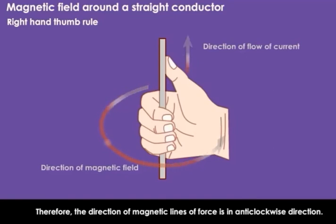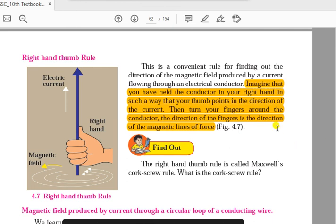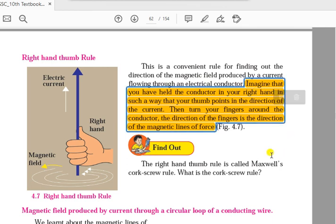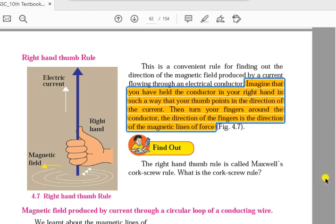Therefore, the direction of magnetic lines of force is in an anticlockwise direction when the direction of flow of current is upward. The textbook statement says: imagine you have held the conductor in your right hand such that your thumb points in the direction of the current, then the direction of your fingers around the conductor gives the direction of magnetic lines of force. This is the Right Hand Thumb Rule to tell us the direction of magnetic field for a given direction of current.